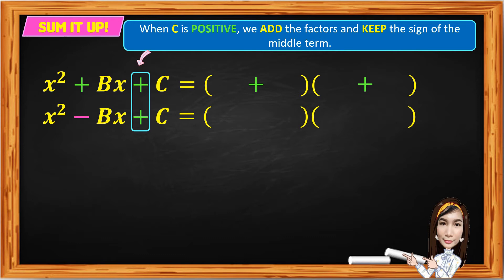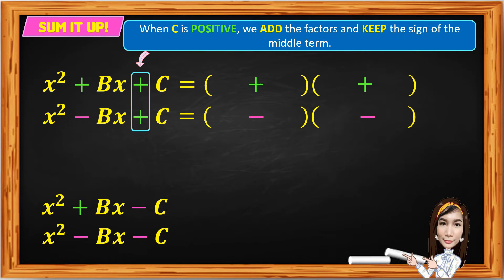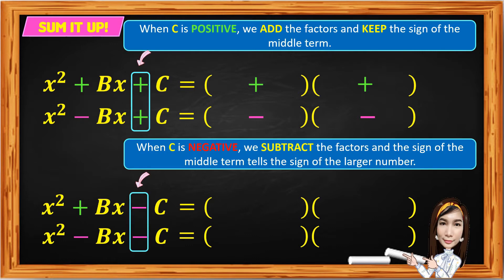In x squared minus bx plus c, the middle term is negative, so the factors are both negative and the operations of the binomial factors are both minus. For x squared plus bx minus c and x squared minus bx minus c, when c is negative, we subtract the factors and the sign of the middle term tells the sign of the larger number. On the first given we have plus, on the second we have minus. The sign of the middle term tells the sign of the greater absolute value, and the sign of the second binomial factor is the opposite sign.